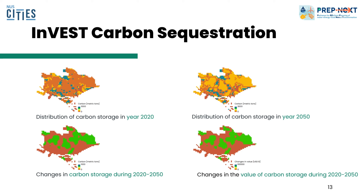Lastly, through the INVEST Carbon Storage and Sequestration model, maps of land use along with stocks in four carbon pools were used as the input to estimate the amount of carbon currently stored and the amount of carbon sequestered over time. Here, we set the current and future land use and land cover year to be 2020 and 2050 respectively. The price of carbon, its annual rate of change, and discount rate were also used to estimate the value of this ecosystem service to society.